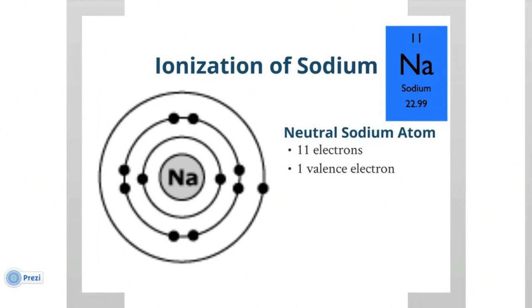Let's take a look at what happens when sodium is ionized. Look at the periodic table. It has an atomic number of 11. Therefore, the neutral sodium atom will have 11 protons and 11 electrons. Look at the figure to the left. You can see that it has 1 valence electron.